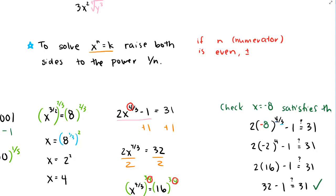The big idea is that for an exponential equation, we apply the reciprocal power to both sides to solve it, and if the exponent n is even we need to consider both plus and minus solutions. I've posted an activity — please take a look. In the next video we'll talk through that activity briefly.